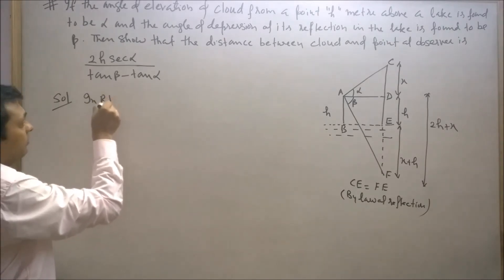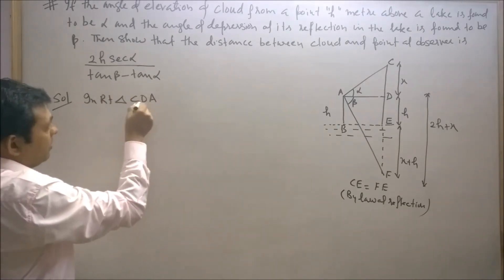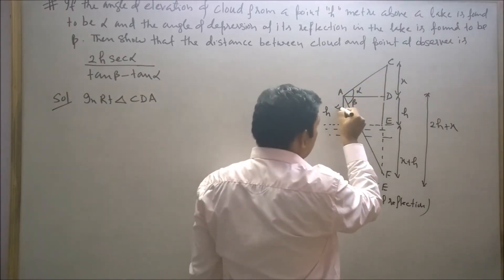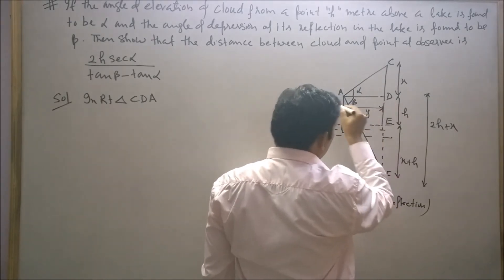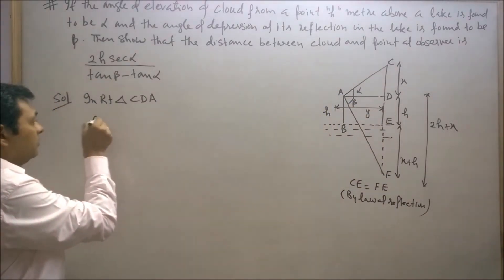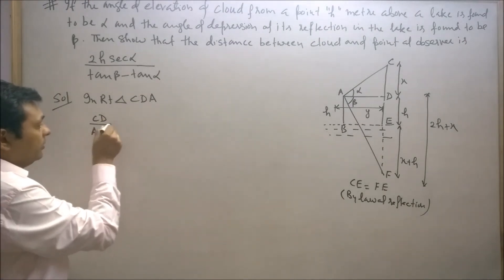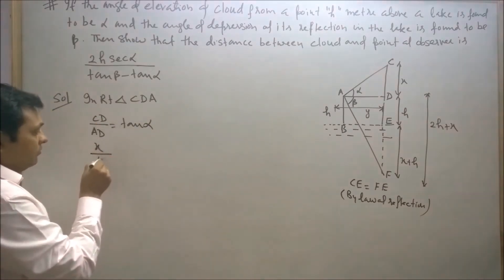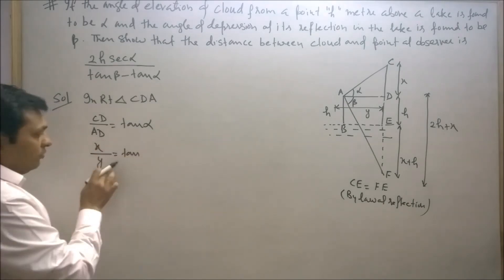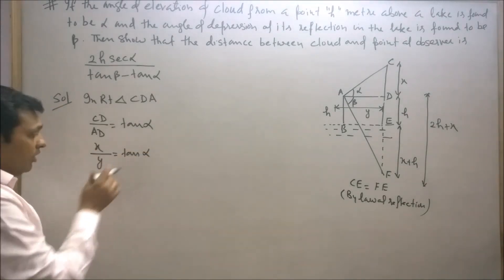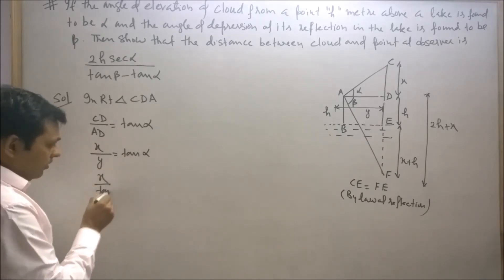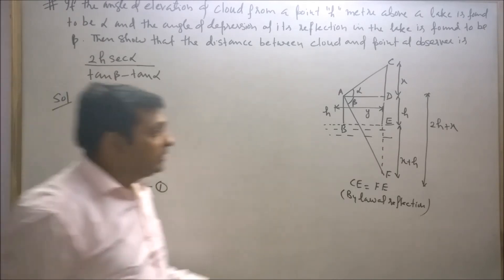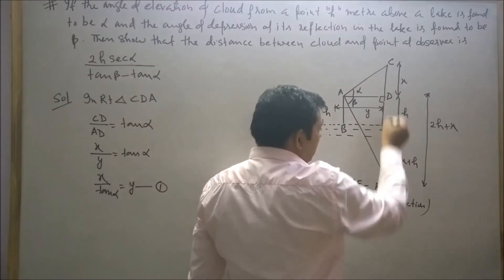In right triangle CDA, CD upon AD equals tan(α). Let's say AD is Y. CD is X and AD is Y, therefore X upon Y equals tan(α). Then Y equals X upon tan(α). Let's say this is our first equation.